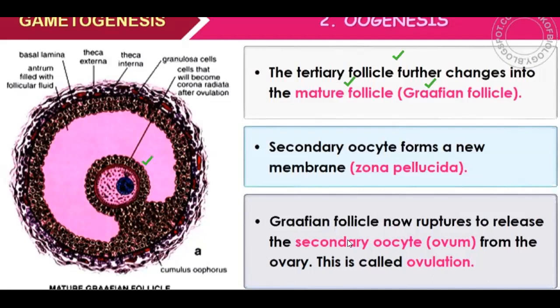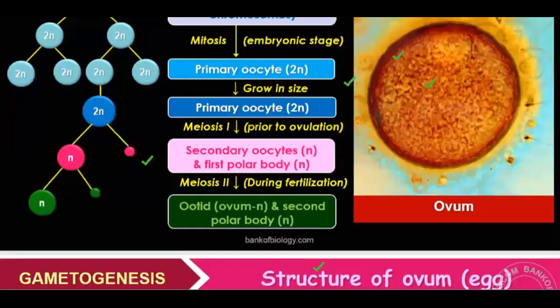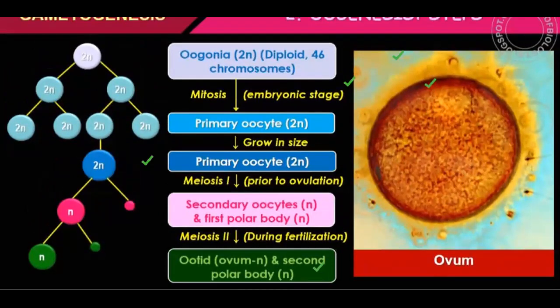The Graafian follicle now ruptures to release the secondary oocyte from the ovary. This is called ovulation. The tertiary follicle is converted into the Graafian follicle, which then comes to include the zona pellucida.